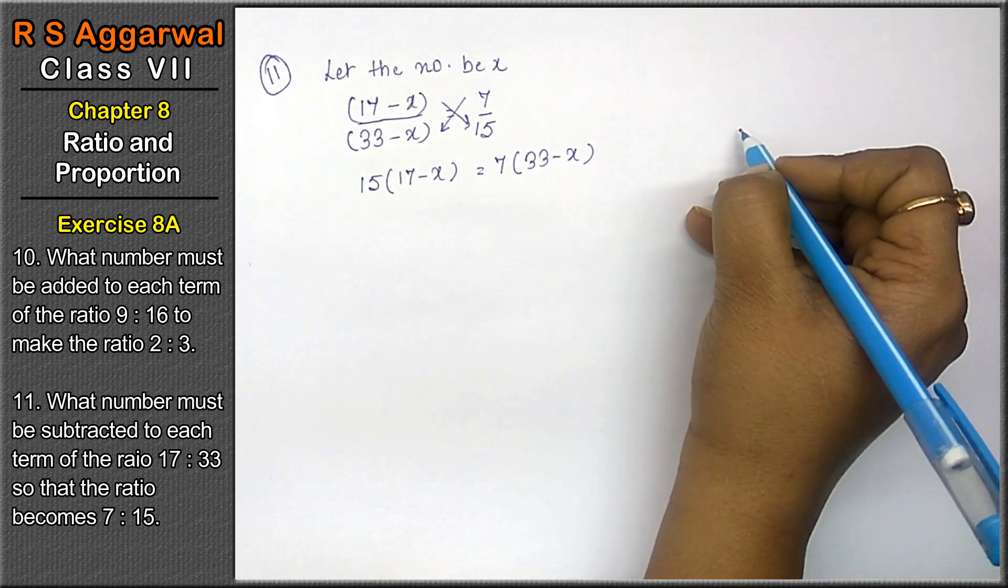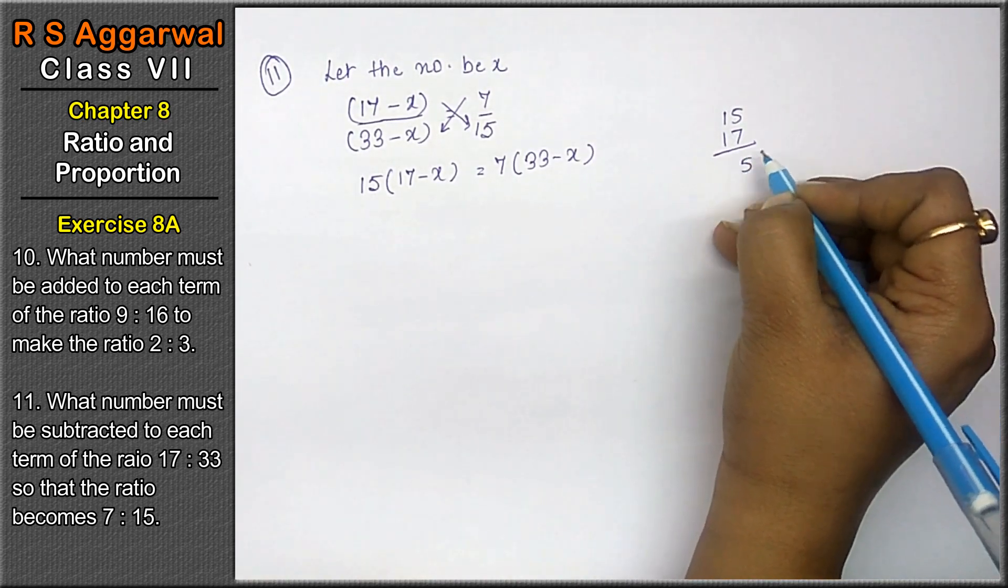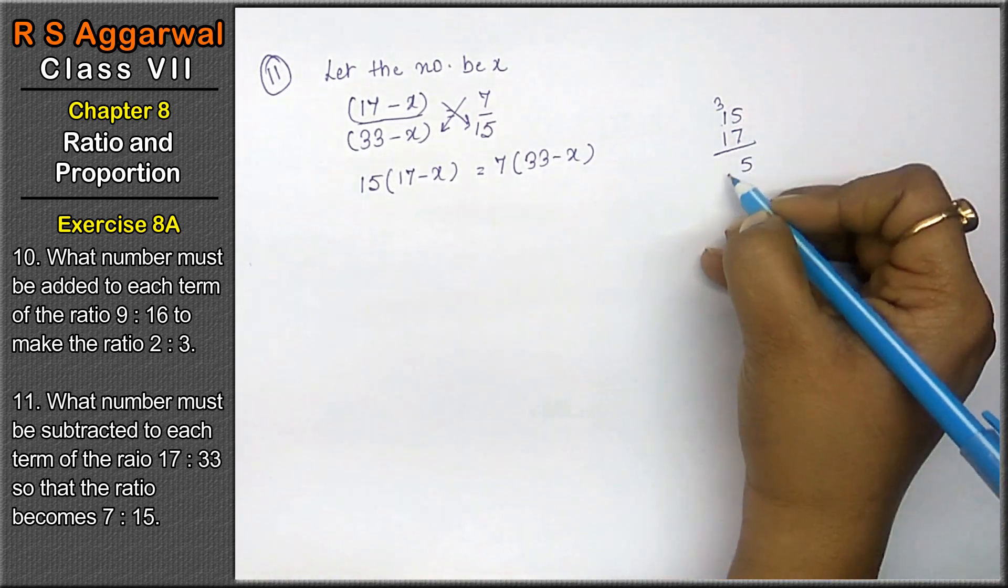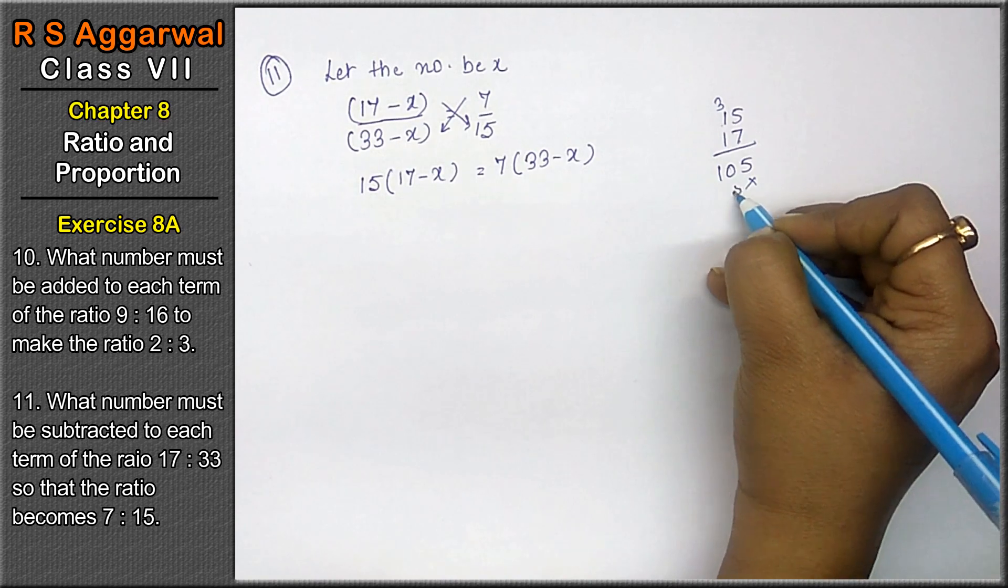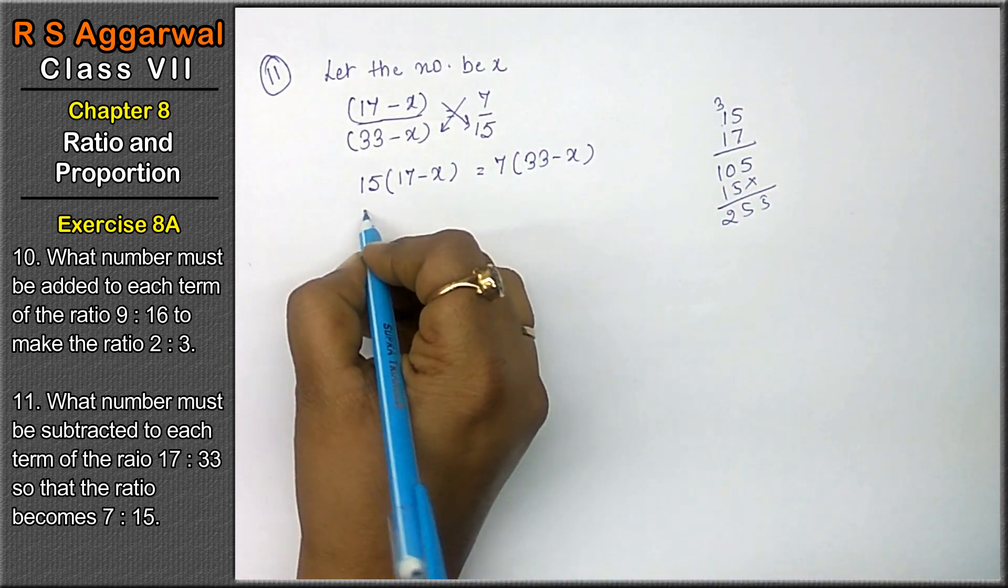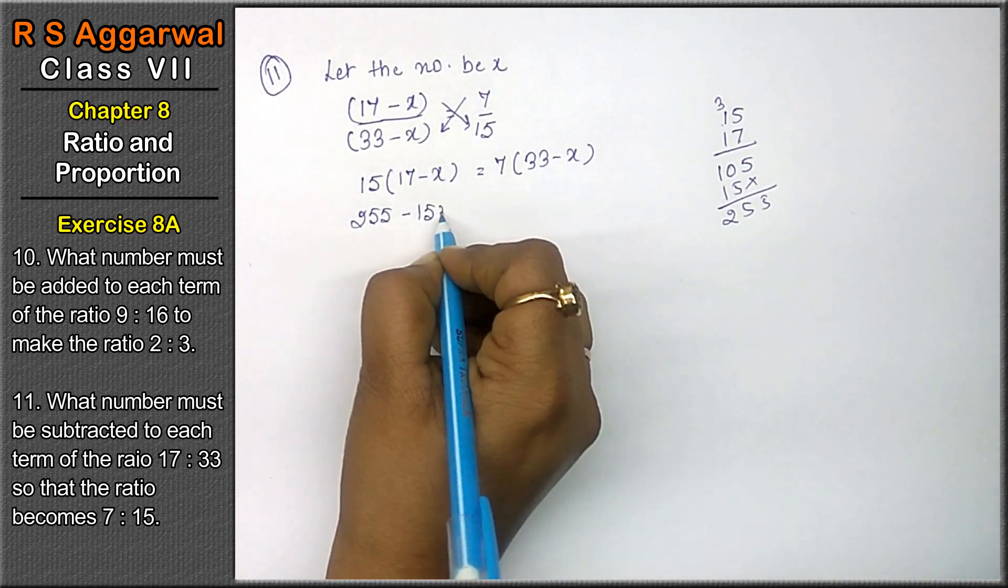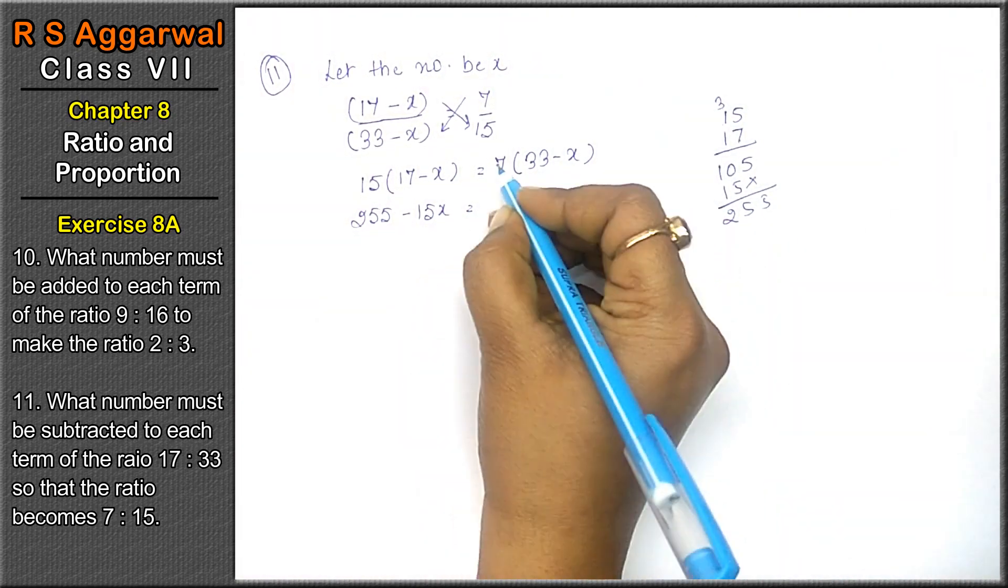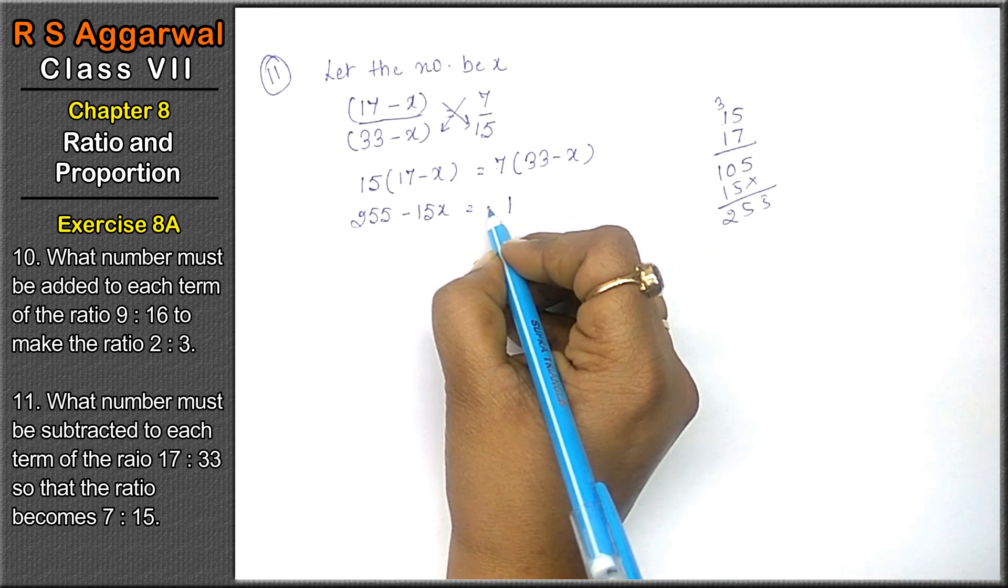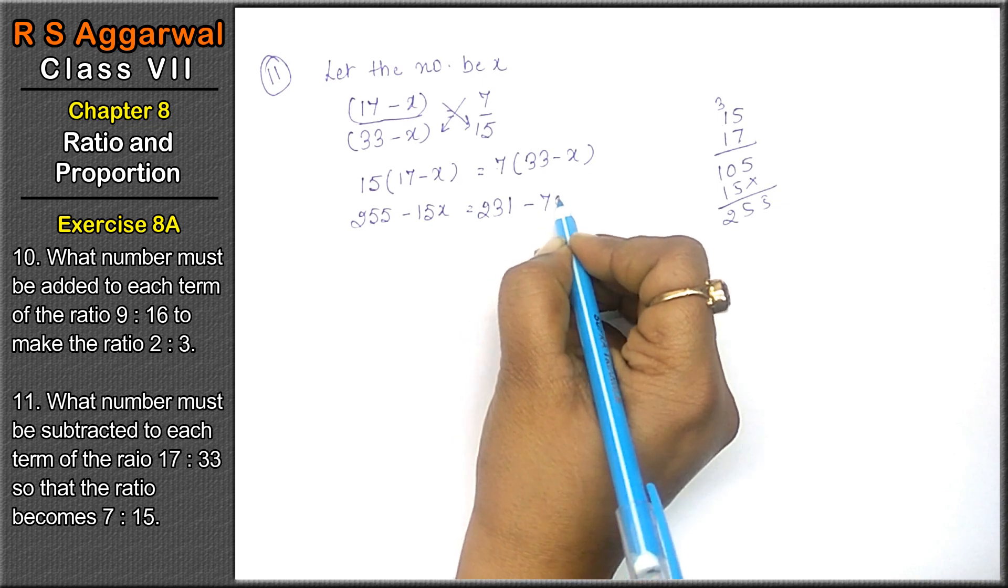What will this be? 15 into 17. 7, 5 is 35. 7, 1 is 7. 8, 9, 10. 5 and 1. 5, 5 and 2. That means 255 minus 15x equals to 7, 3 is 21. 21 plus 2 is 23, so 231 minus 7x.